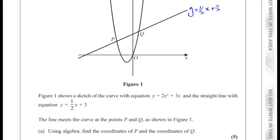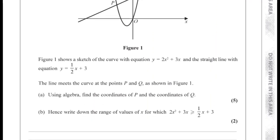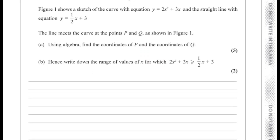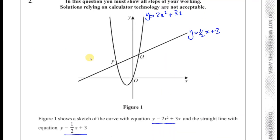Figure 1 shows a sketch of the curve with equation y equals 2x squared plus 3x and the straight line with equation y equals a half x plus 3. The line meets the curve at points P and Q as shown. Using algebra, find the coordinates of P and the coordinates of Q. So basically we've got to solve these equations simultaneously. I've got to find the value of x and y which is the same for both of these two equations.